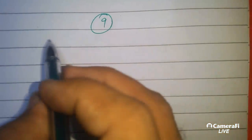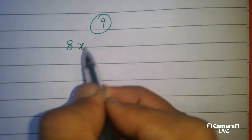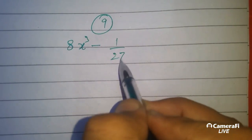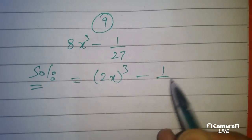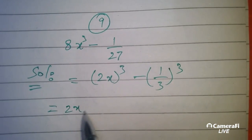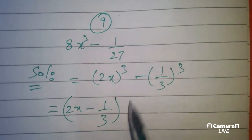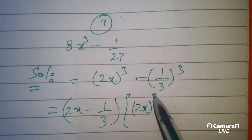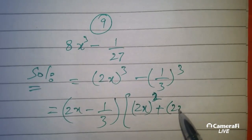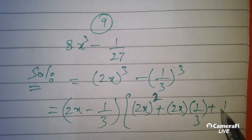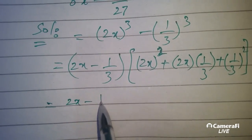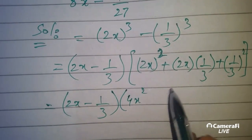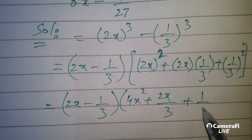Now we go to question number 9: 8x cubed minus 1 over 27. We can write this as 2x cubed minus one-third cubed. Applying the cubic formula — these are very rhythmic questions, just apply the formula and the question will be solved. We get 2x minus one-third, times 4x squared plus 2x over 3 plus 1 over 9.